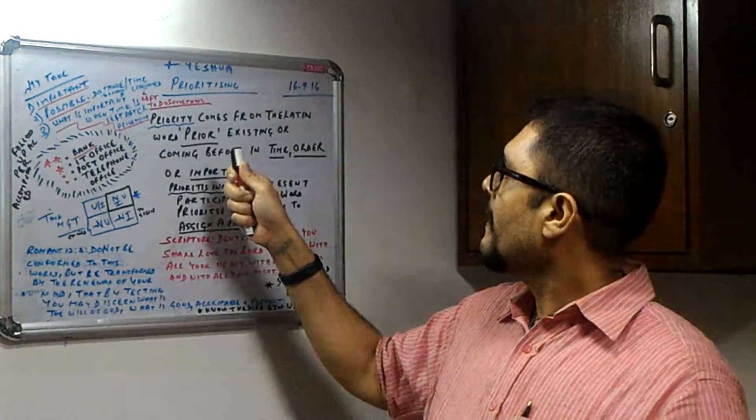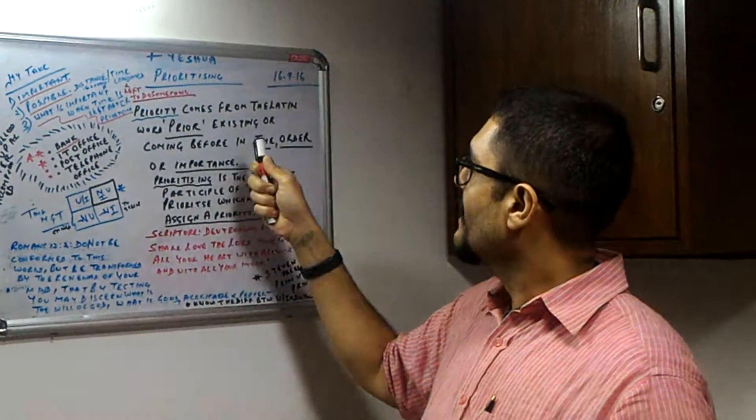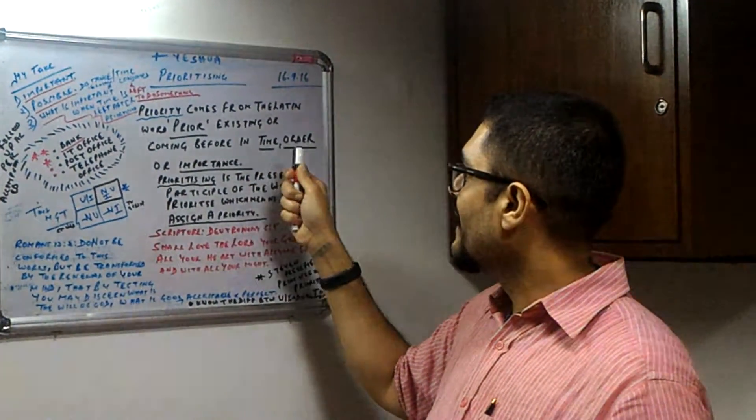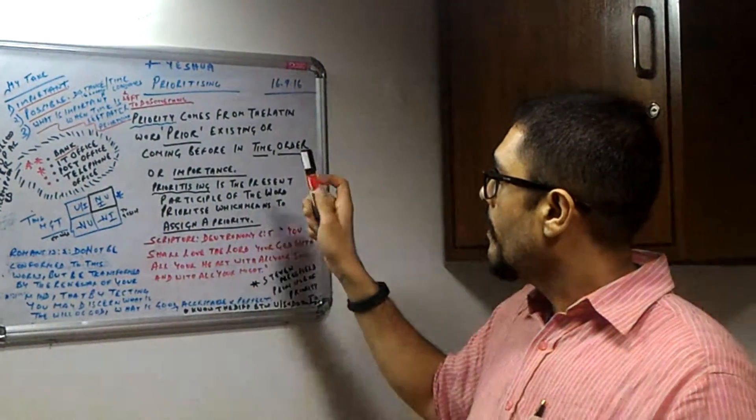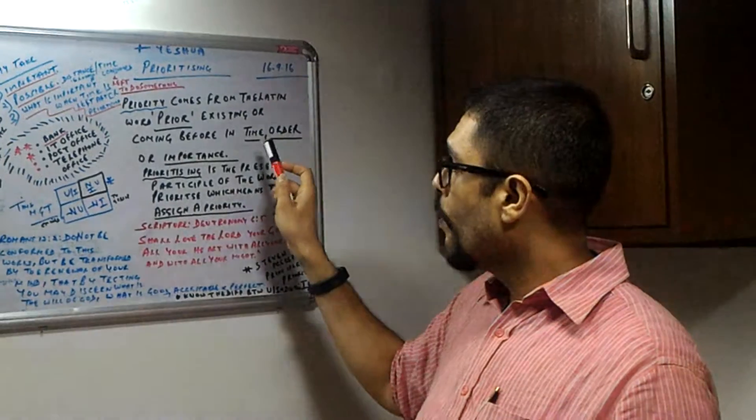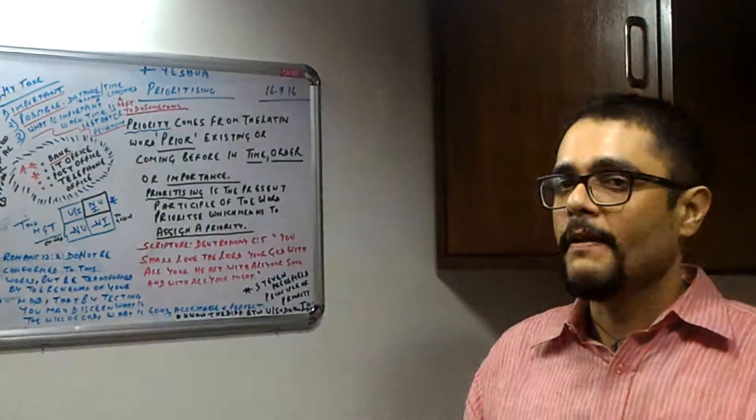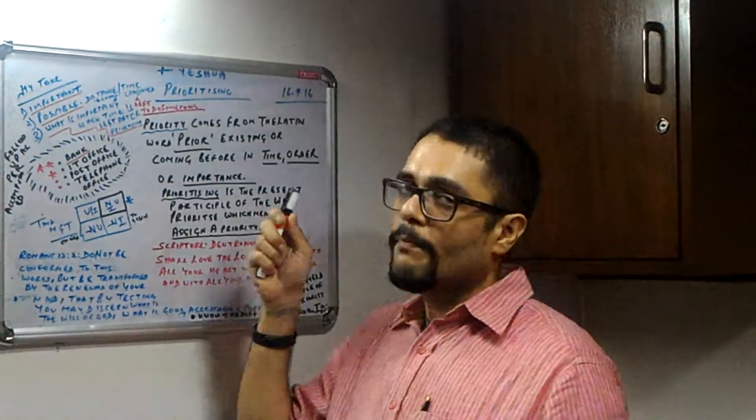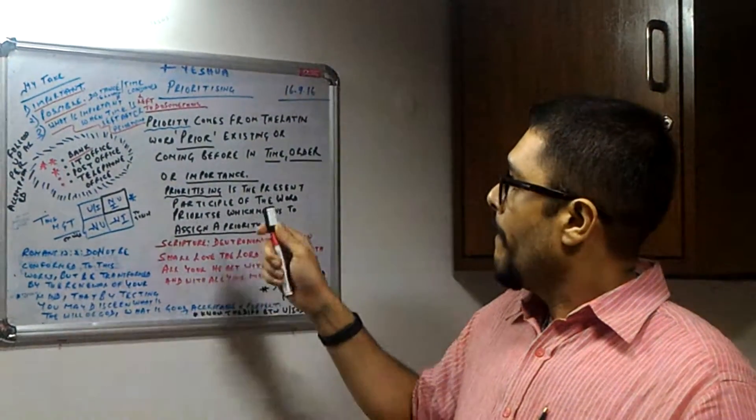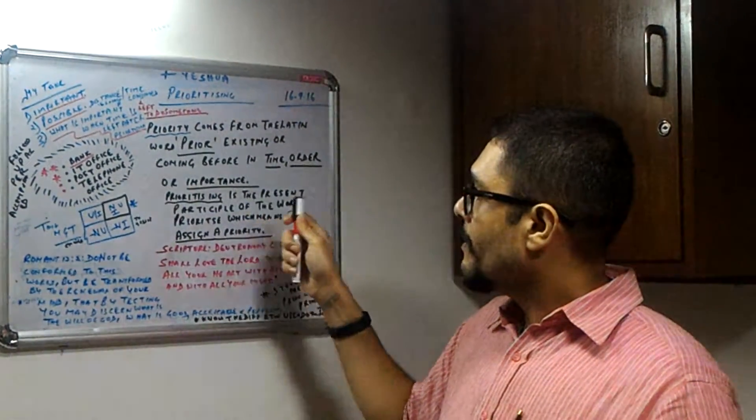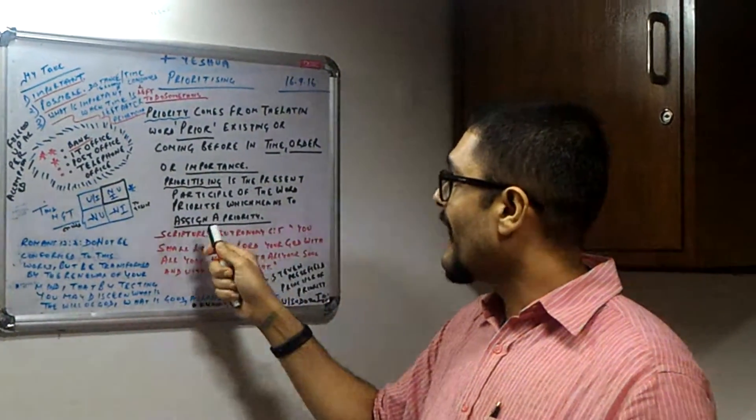Priority comes from the Latin word prior, which means existing or coming before in time, order, or importance. We have to underline these words and know that time, order, and importance is very important in prioritizing something. Prioritizing is the present participle of the word prioritize, which means to assign a priority.